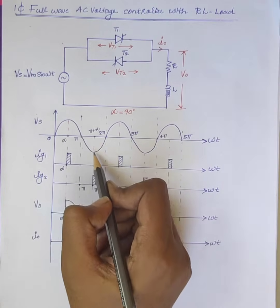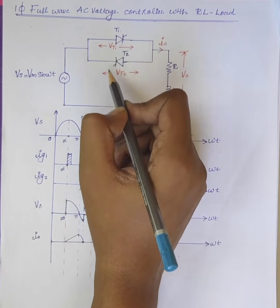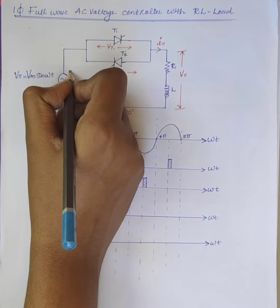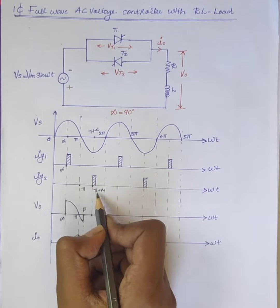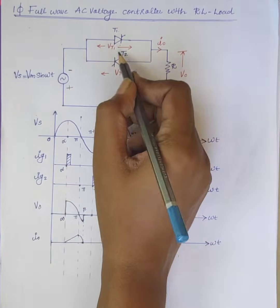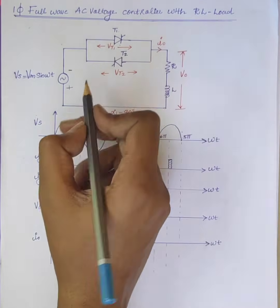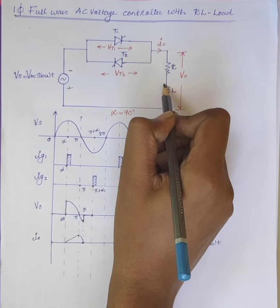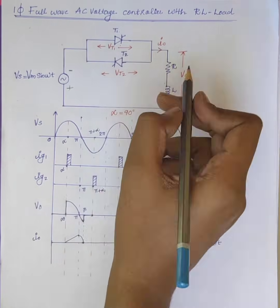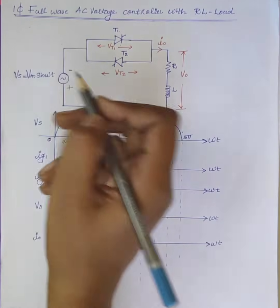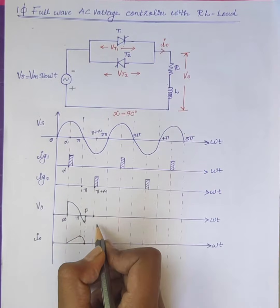During the negative half cycle, thyristor T2 is forward biased. At ωt equal to π plus alpha, firing pulses are given to T2 and current flows through the path: positive terminal → load → T2 → back to the source. So the output voltage is minus Vs, and this voltage appears across the load.